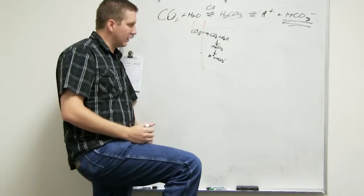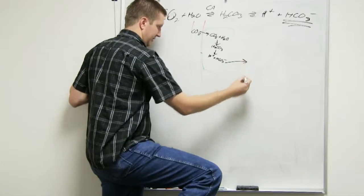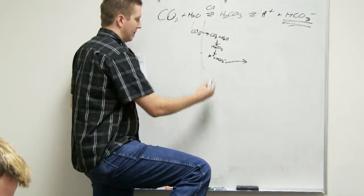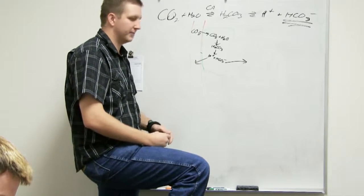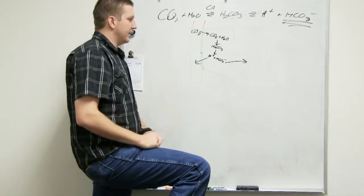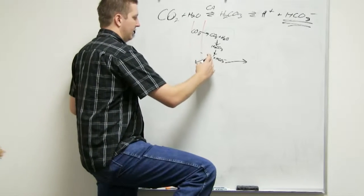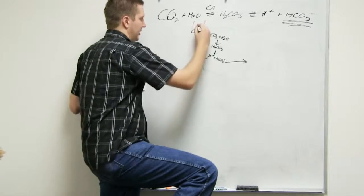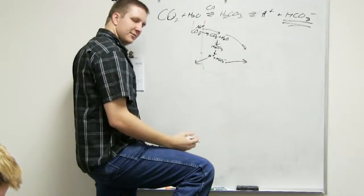So, we secrete the bicarbonate into the duct and put the acid into the blood. And technically, it's sodium bicarbonate. So, as this is going on, we also take, we're losing a positive ion to the blood. So, we take sodium and bring it into the cell and then out to the duct as well.